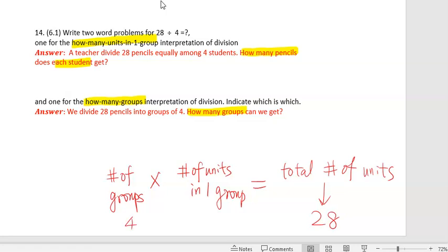Four could be four groups, and we're solving for how many units in one. But 4 could also be the number of units, and we're solving for the number of groups. What times 4 equals 28? So there will be two types of division problems.